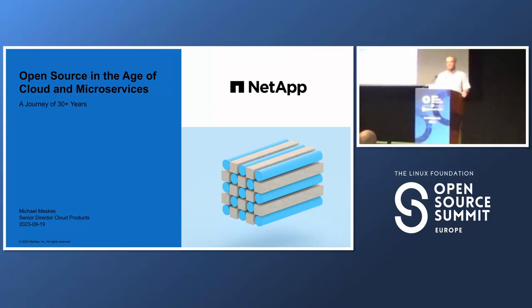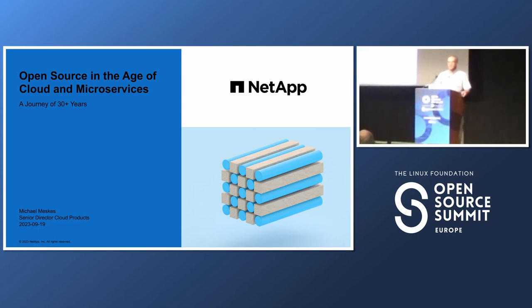I hope everyone is in the right presentation. I found it slightly confusing here with 0E1 and 0E2. But anyway, this is the open source on-ramp. The idea was for me to present a little bit about where we stand with open source now in the current age and how we got there and what we can learn from it. If we don't learn from the past, we're bound to repeat it. There are a lot of things that worked out in the past, were forgotten, or didn't work out at all and were tried again.